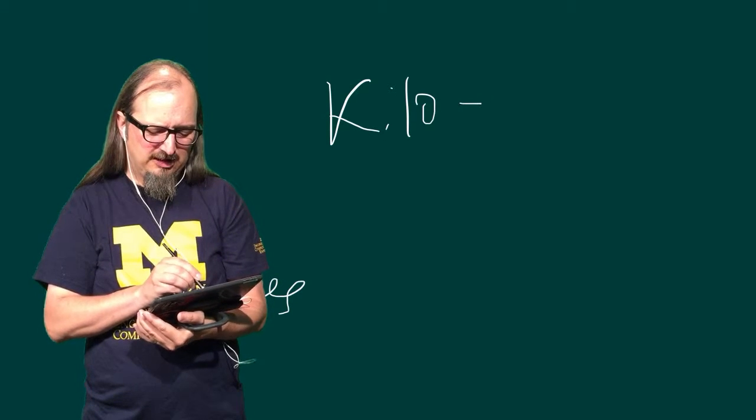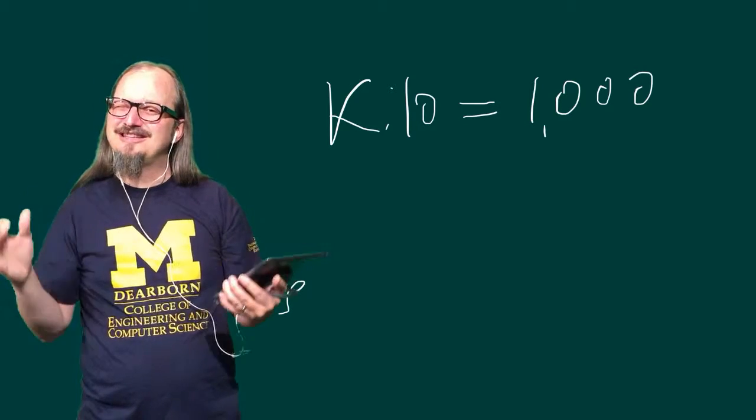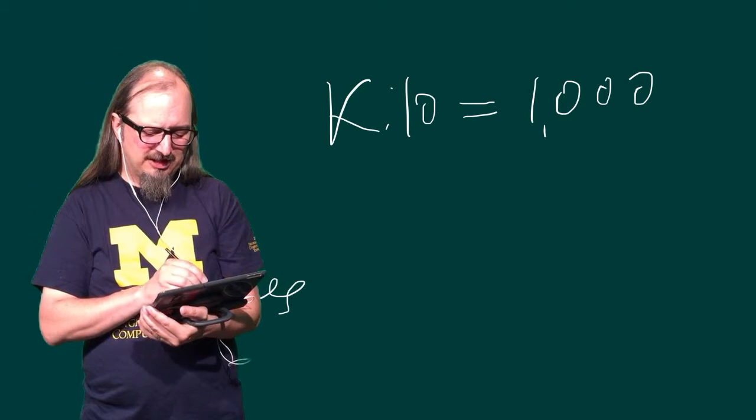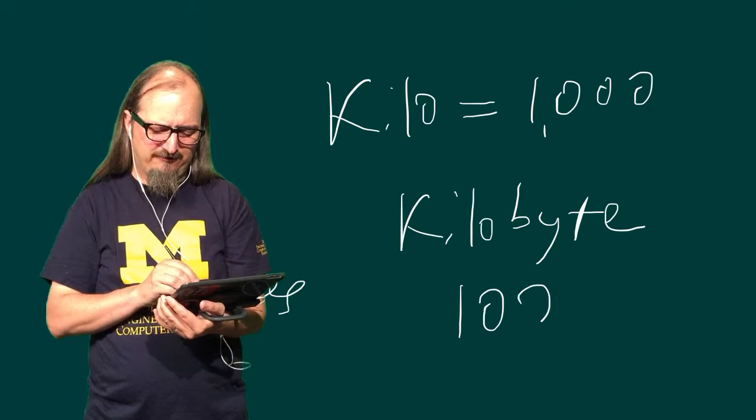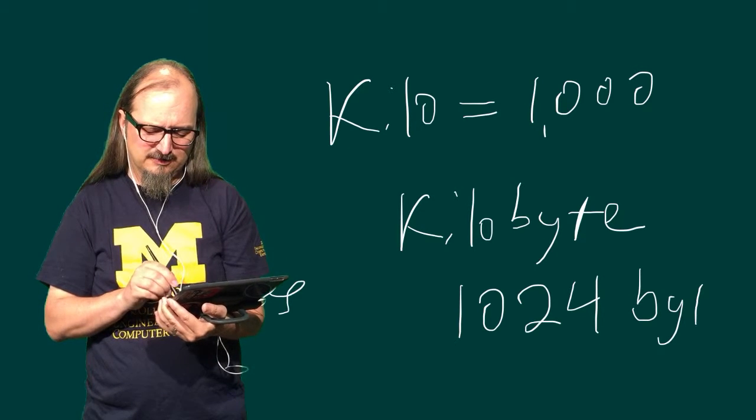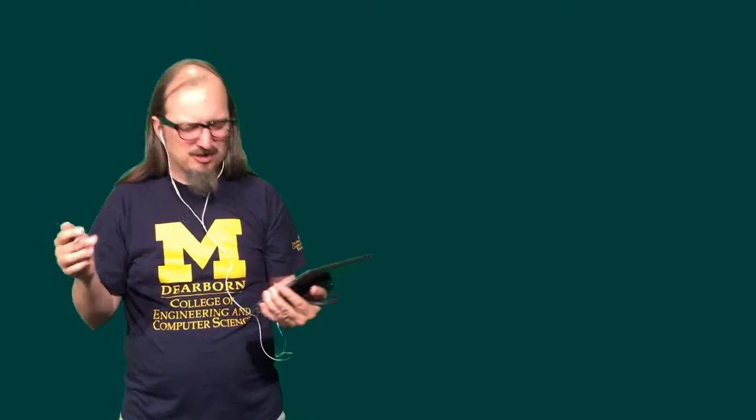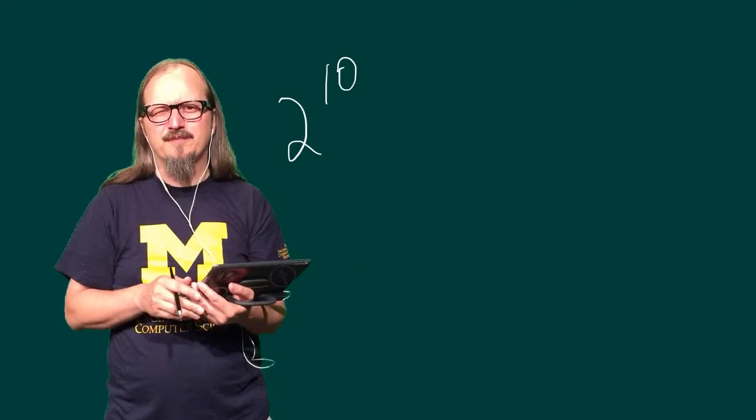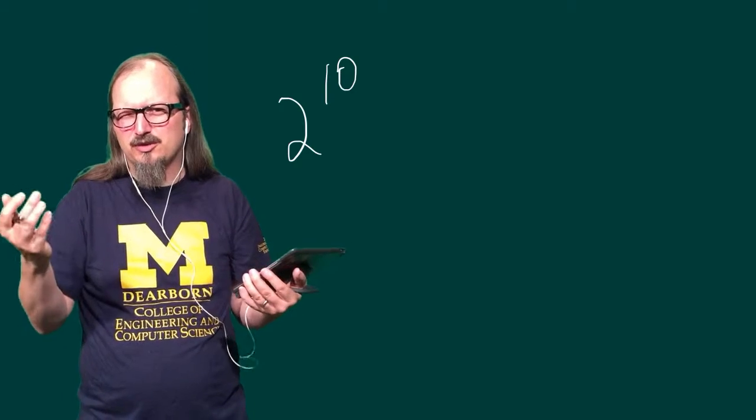So a kilobyte—now you may remember from your metric conversions that kilo in metric equals 1,000. It's a metric prefix. Computers use it a little bit differently. In a computer, a kilobyte is 1,024 bytes. Why not a thousand? Well, computers have to think abstractly about numbers. So in this case, what we're really doing is we're thinking about 2 to the 10 bytes. And everything is always done from 2 raised to a power when we're dealing with computers.